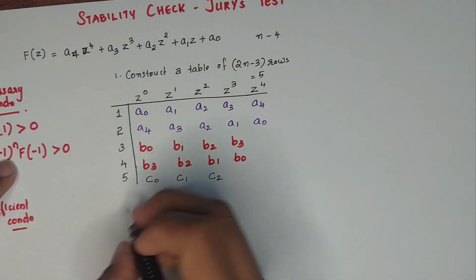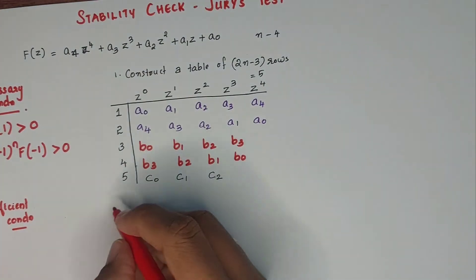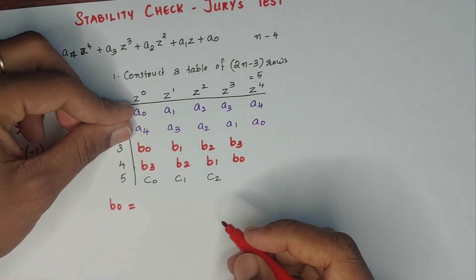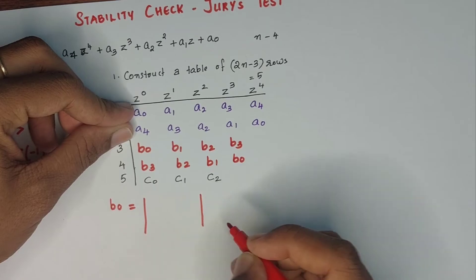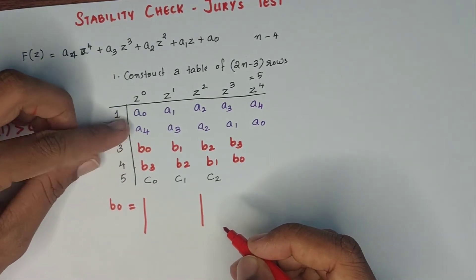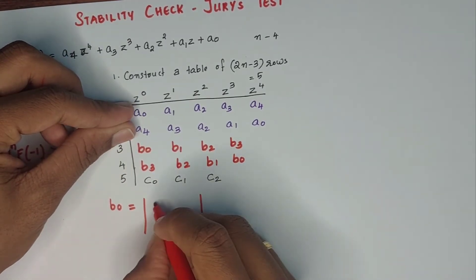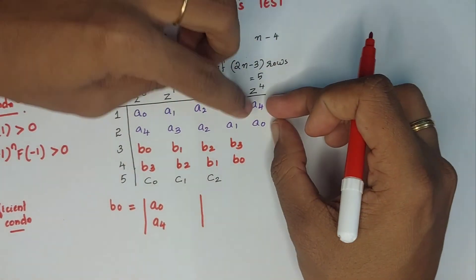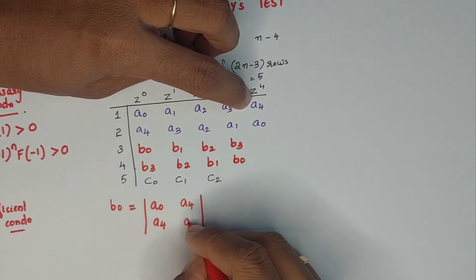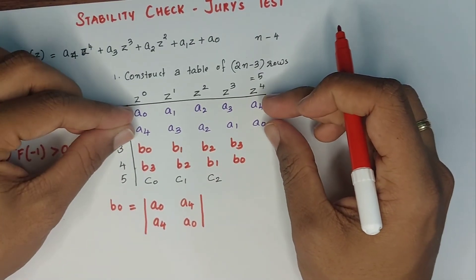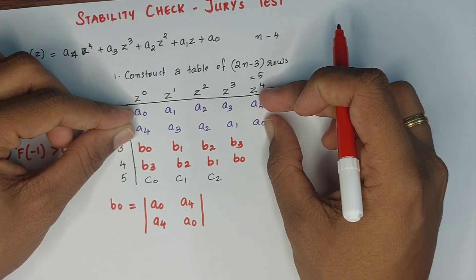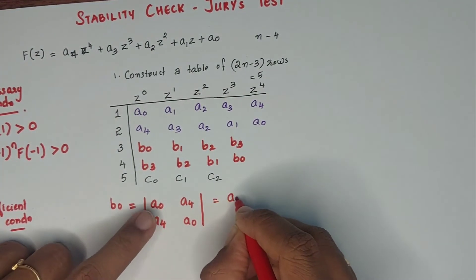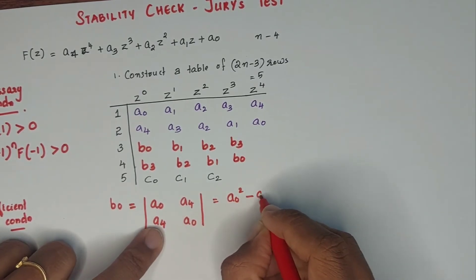Let's see how to write B0. B0 is equal to the determinant with values: |A0, A4; A4, A0|, which equals A0² − A4².